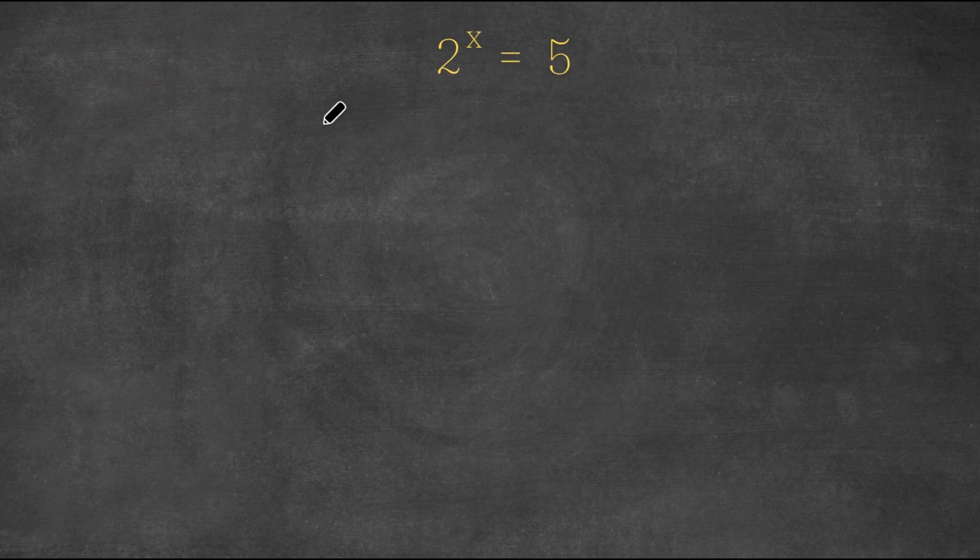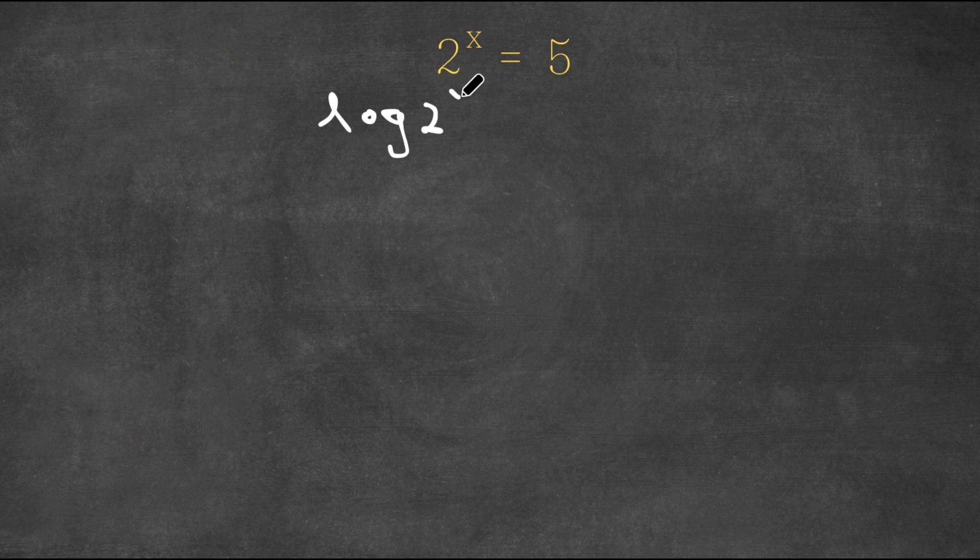Now what I'm first going to do is take the log of both sides. So now I have log 2 to the power of x is equal to log 5.